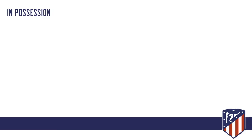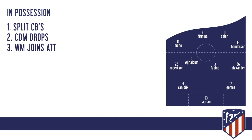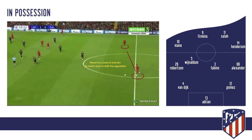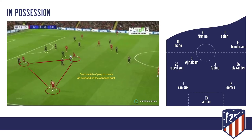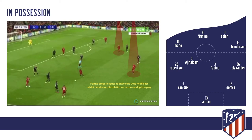Now let's get on to tactical analysis — in possession. Liverpool set up with Van Dijk and Gomez, or whichever two centre-backs, dropping and splitting when playing out from the back. Fabinho drops as a centre-defensive midfielder, and Wijnaldum or Henderson joins the forward line. In this clip, Jordan Henderson is visible — they revert to a back two and try to switch play to shift the opposition across. Robertson receives as the high full-back, creating a triangle with an overload of three versus two. Fabinho drops inside and Henderson pushes forward to create space on the wing.